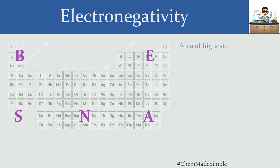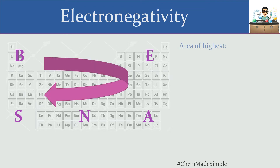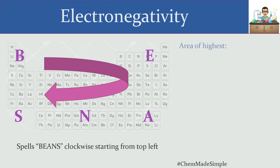I'm going to write down B, E, A, N, S. If you look at how I drew these letters from top-left to bottom-left in a clockwise fashion, those letters spell the word BEANS. On your periodic table — or if you don't have one, just draw a little rectangle — write down B, E, A, N, S in a clockwise fashion from top-left to bottom-left.